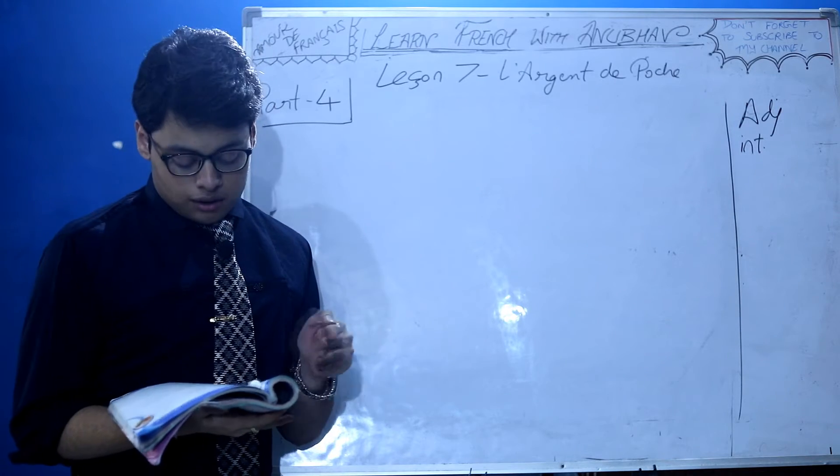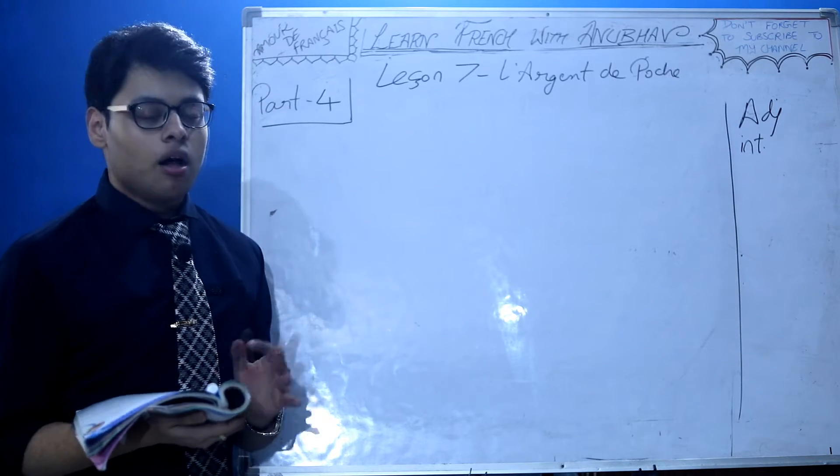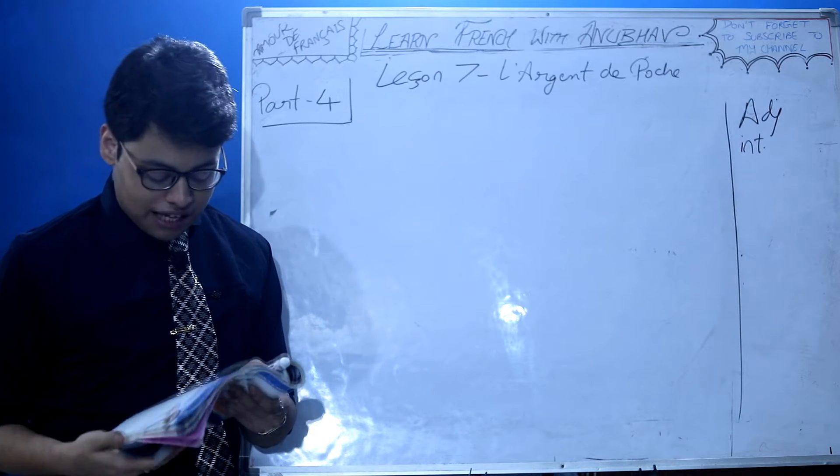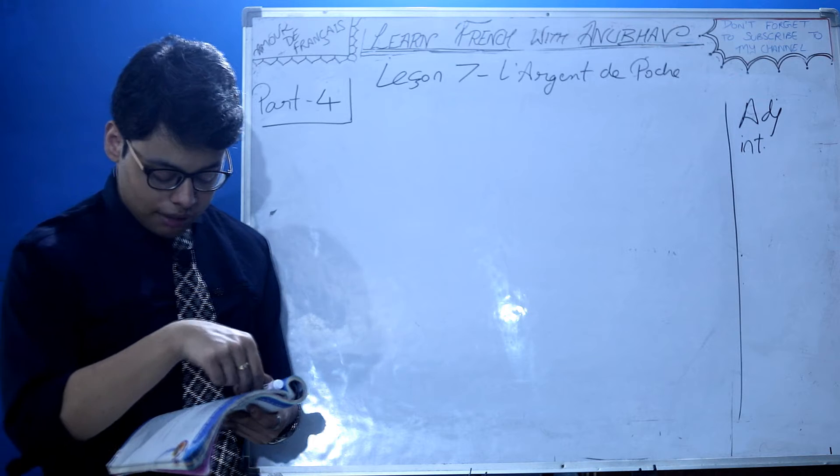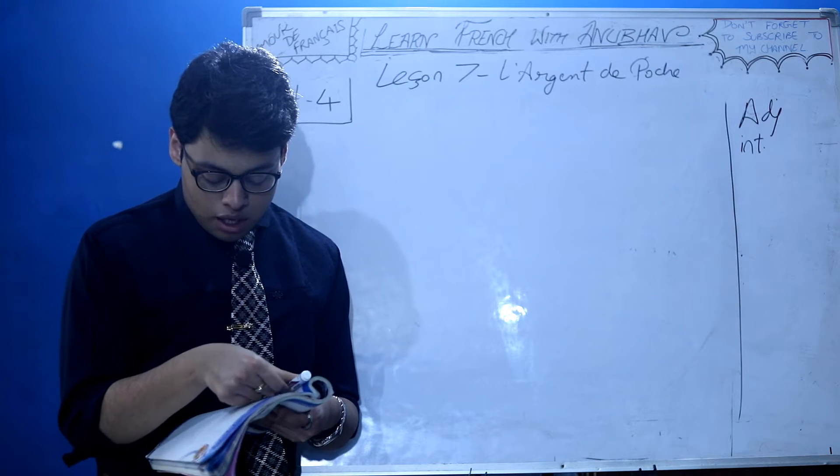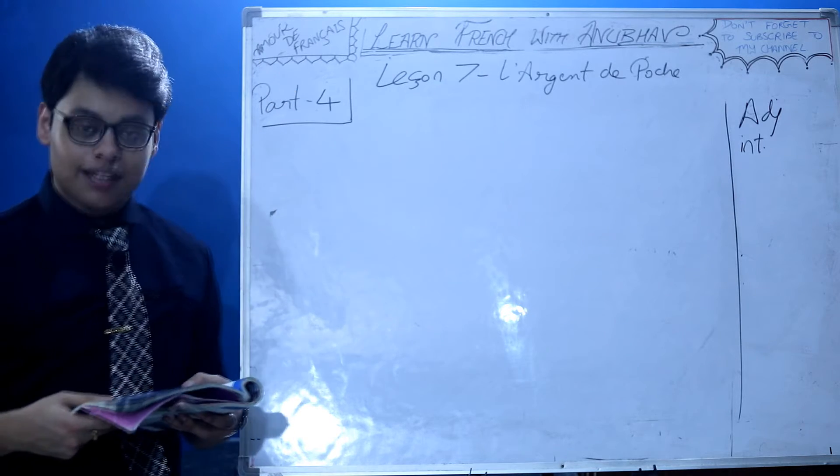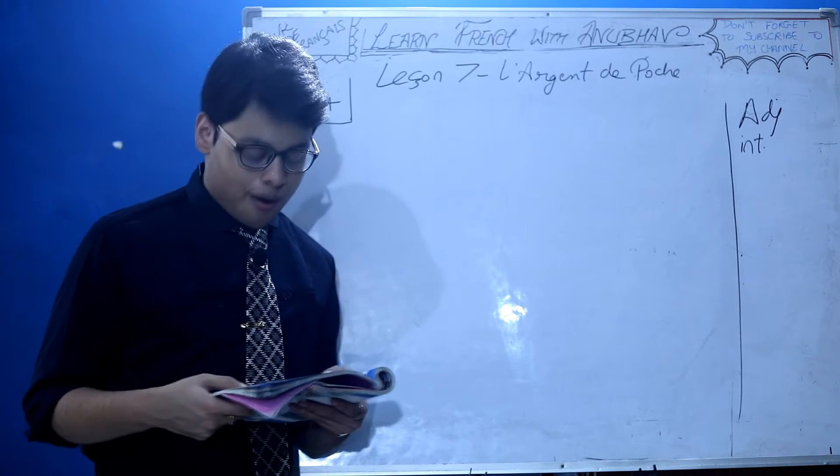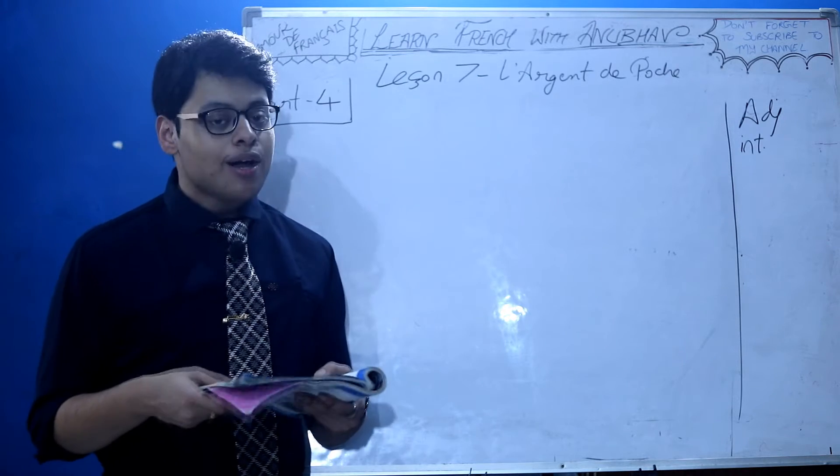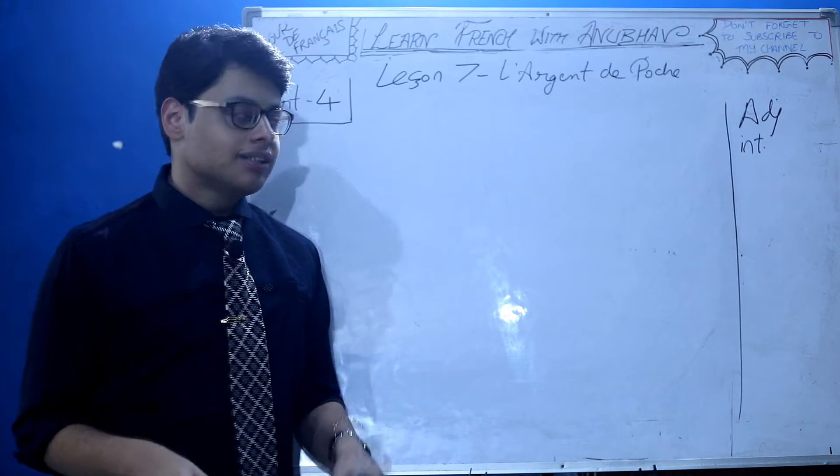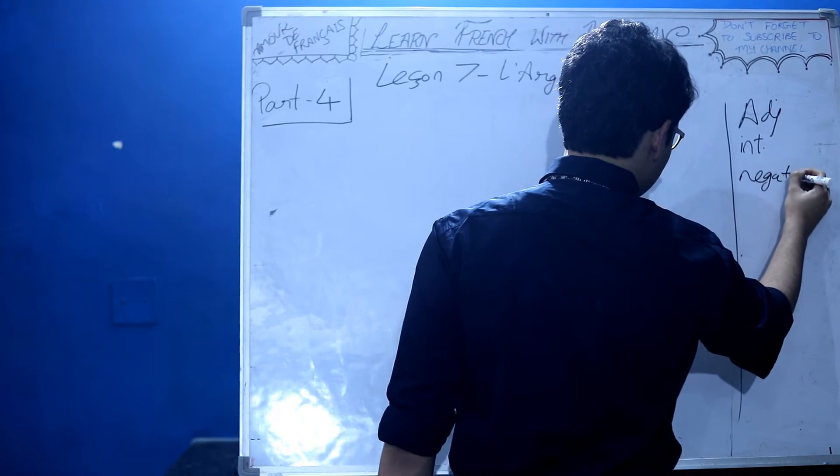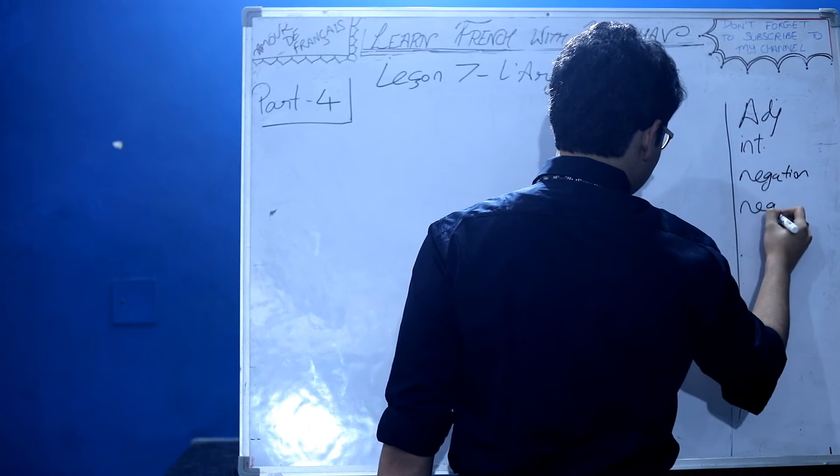Exercise A3: Réponds par des phrases négatives en employant ne pas, ne pas encore, ne personne, ne rien, ne plus. Do this exercise using negative phrases like not, not yet, nobody, nothing, no more. For this, watch the negation video on negative expressions.